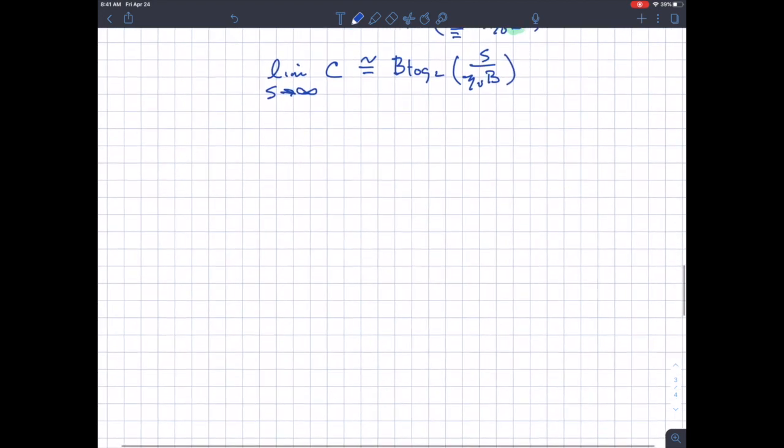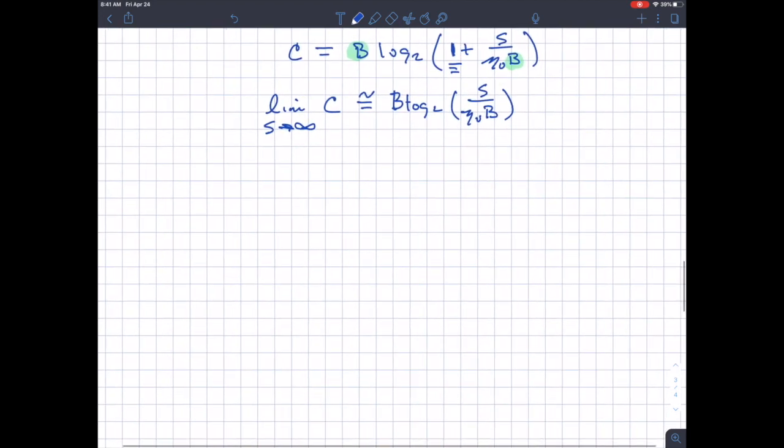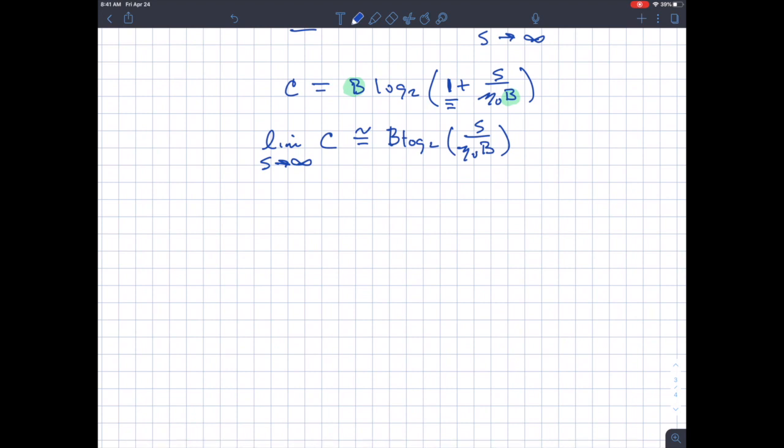So we're looking at, when you increase the signal to the noise ratio, or increase the signal power, what you can do is you can separate the levels further and further apart. And if you have enough power to do that, you should be able to communicate faster and faster and faster. And so if you look at this, and you said S goes to infinity, you would get basically this logarithm shape.